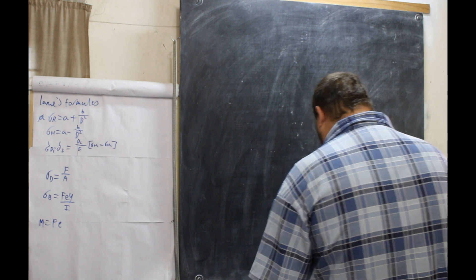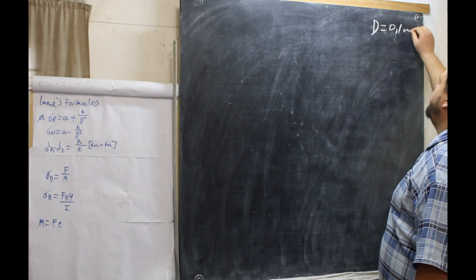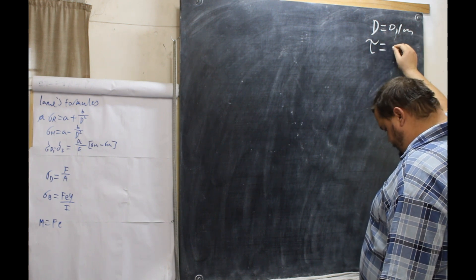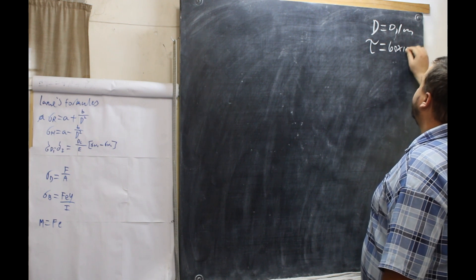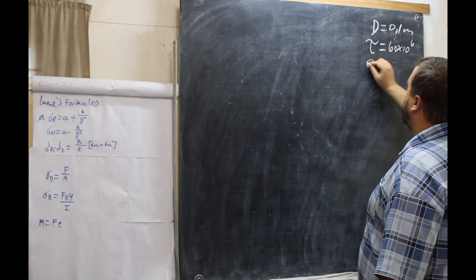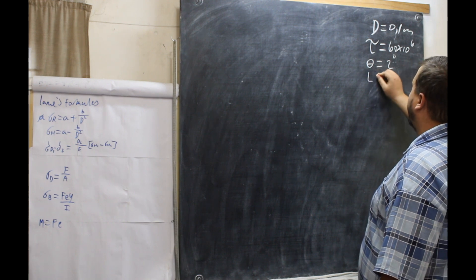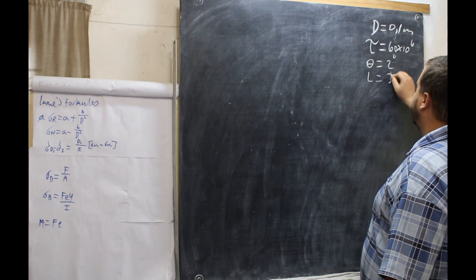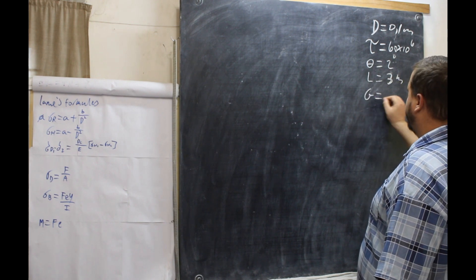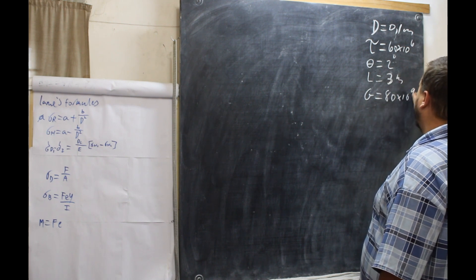Let's gather our data. Diameter is 0.1 meters. Shear stress is 60 × 10⁶ pascals. Theta is 2 degrees. Length is 3 meters. And G is 80 × 10⁹ pascals.